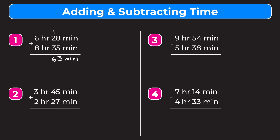Now we add the hours: 6 plus 8 gives us 14 hours. Right now we have 14 hours and 63 minutes, but 60 minutes equals one hour, so we need to simplify. We write this as 14 hours plus 60 minutes plus 3 minutes.